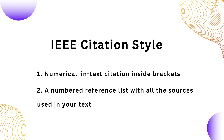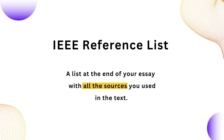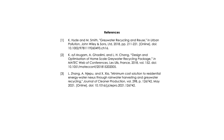Now that you know how to do in-text citations, let's move to the reference list. The second key point of the IAAA citation style is to provide a reference list. This list has all the sources used in your paper, and it appears at the end of your paper on a new page.